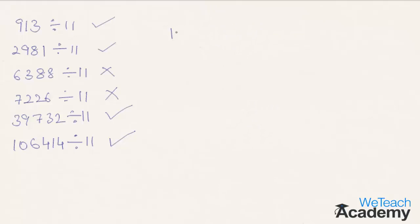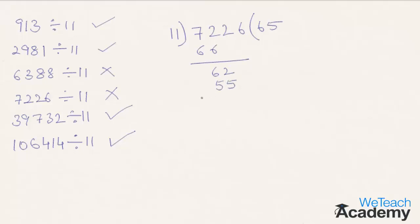Coming to the next number, 7226 divided by 11. 11 times 6 is 66, and we get 6 here. Bringing down the next digit 2, it is 62, and 11 times 5 is 55, we get 7 here. Bringing down the next digit 6, we get 76. Now 11 times 6 is 66, and the remainder is 10. So the given number is not divisible by 11.